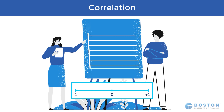A correlation coefficient of negative one means that the securities behave completely opposite of one another — when one security goes up, the other security goes down by exactly the same amount. One example of this would be shorting a security. Once again, due to margin fees and commissions, the short position will not be a perfect negative one correlation, but it also gets pretty close.